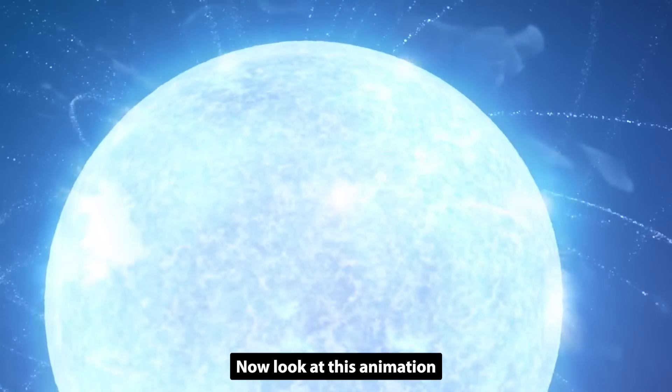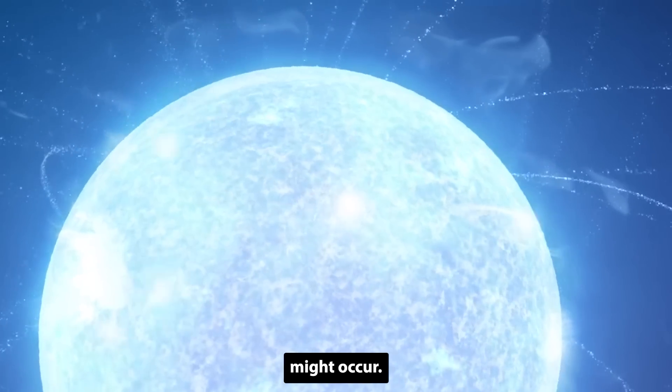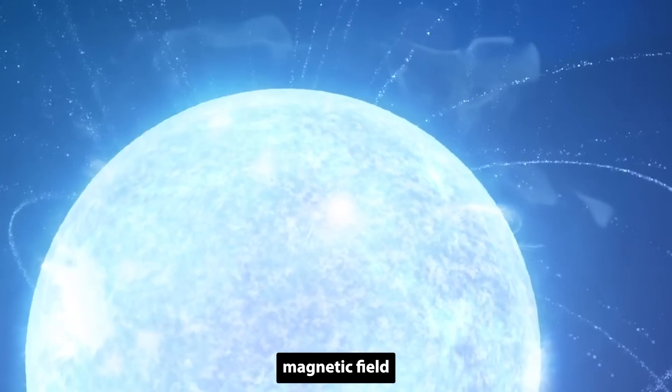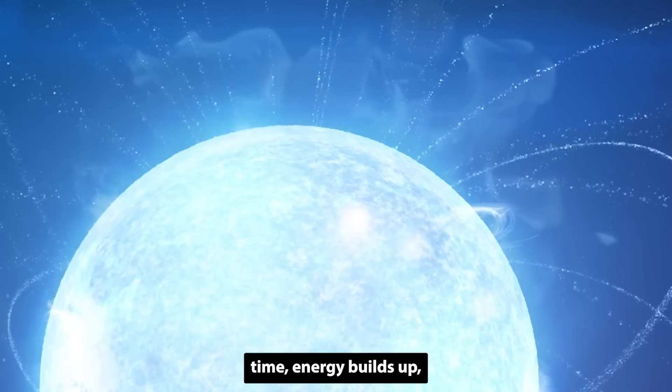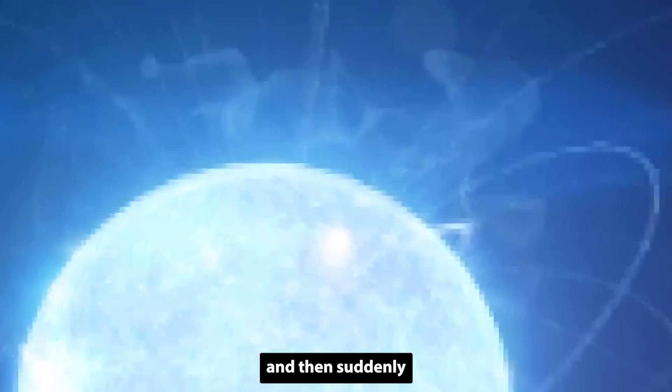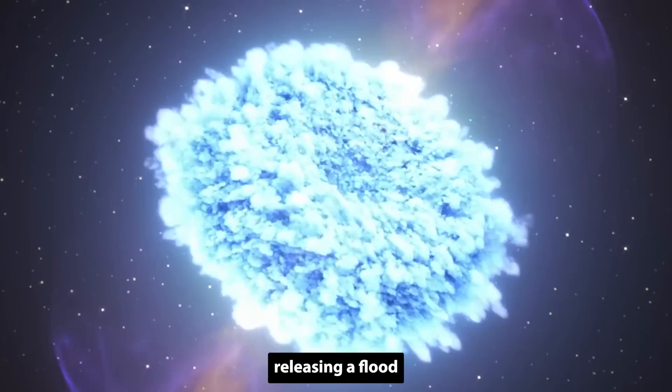Now, look at this animation, showing how a magnetar flare might occur. The magnetar's magnetic field becomes twisted over time, energy builds up, and then suddenly, it snaps, releasing a flood of gamma rays.